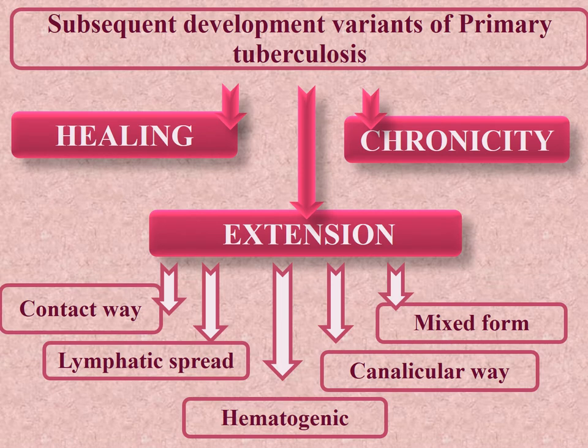Subsequent development variants of primary tuberculosis include: healing, chronicity, and extension. Healing is the commonest result. Most commonly, primary tuberculosis is self-limited with replacement by connective tissue and further calcification. Resolution of the caseous process in lymph nodes is delayed, and TB may remain there, which may lead to chronicity.